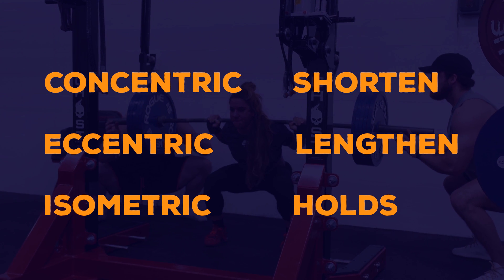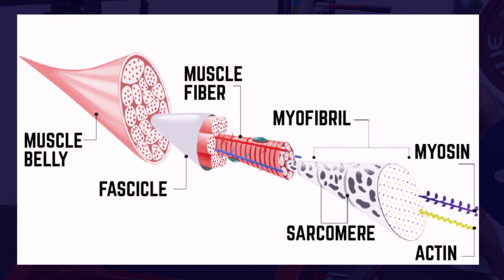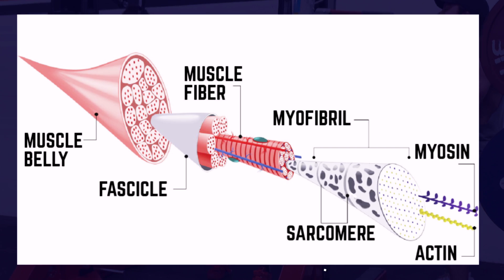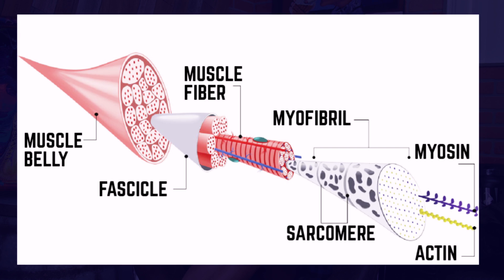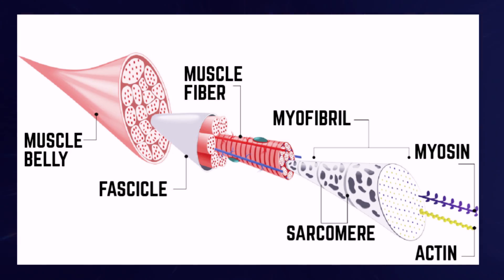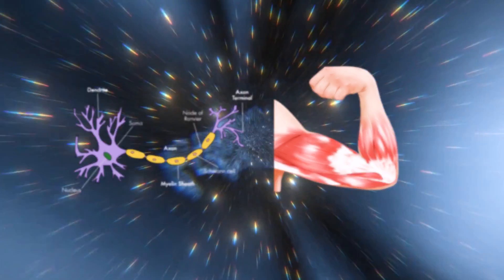Each myofibril is made up of a series of structures called sarcomeres. Each sarcomere contains an overlapping protein structure where thin actin filaments are juxtaposed with thick myosin filaments that form the basis of any muscle contraction.